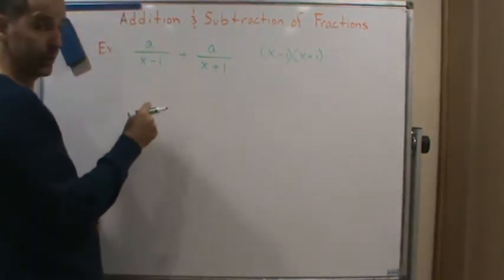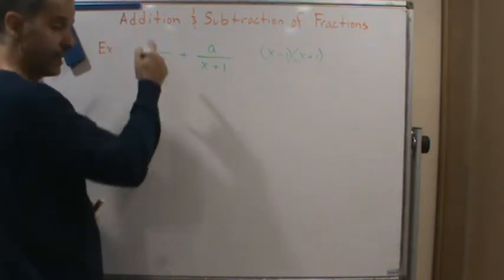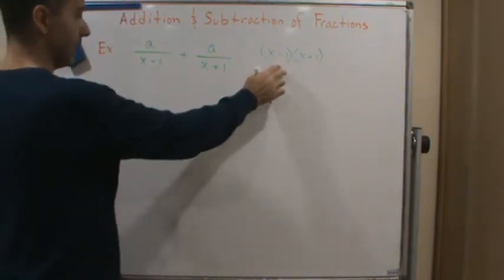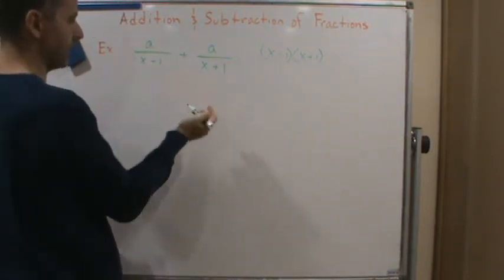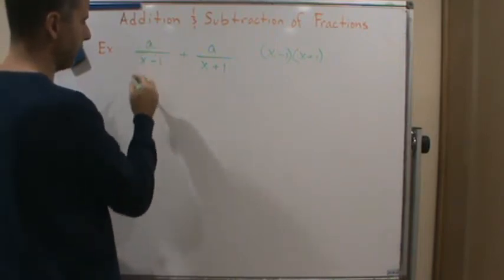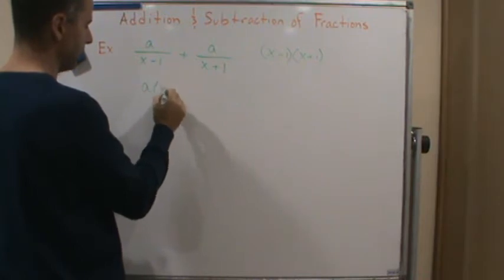Now if this is the lowest common denominator, then what do we need to do to the top and bottom? What do we need to multiply by on the top and bottom in order to get the common denominator? Well, here we're missing x plus 1, so we're going to multiply the top and bottom by x plus 1. So we're going to get a times x plus 1 over x minus 1 times x plus 1.